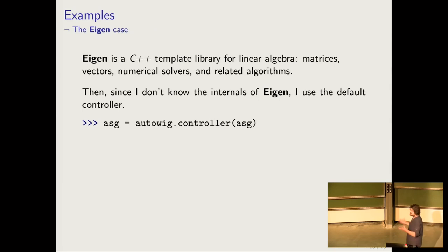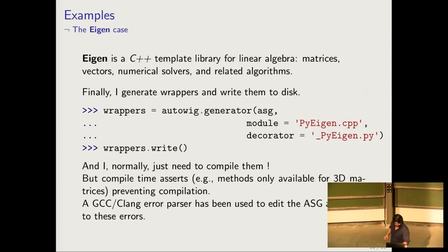Once this is done, you have a new ASG which is completed, and since I don't really know how Eigen is working internally, I just need the default control to have some rules pre-defined in order to generate my wrappers. Once I've done that, I just need to use the generator to write a Python module, pyEigenCpp, and a decorator, pyEigenPy, and write them to disk.